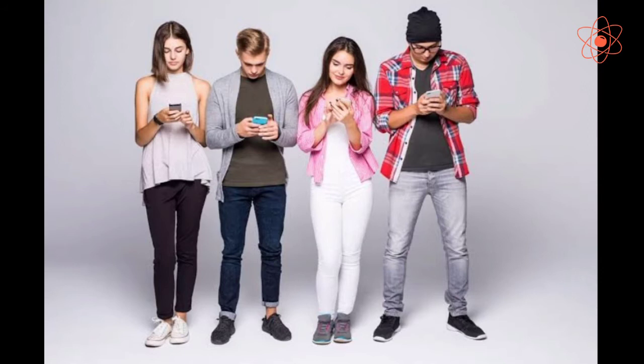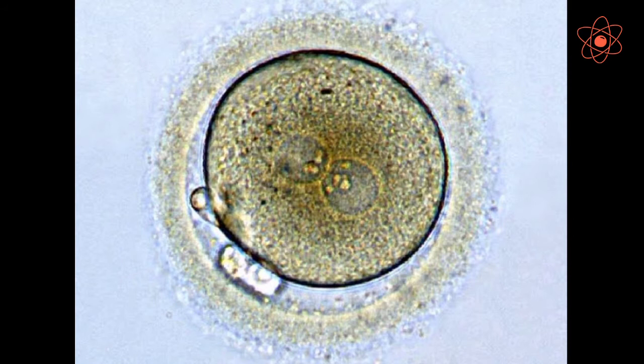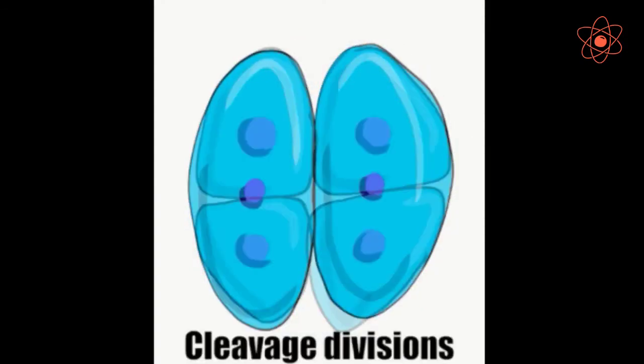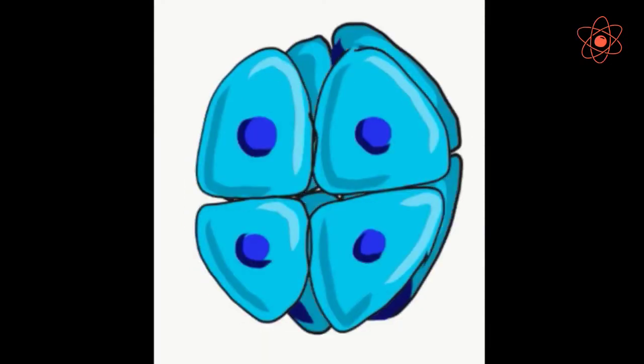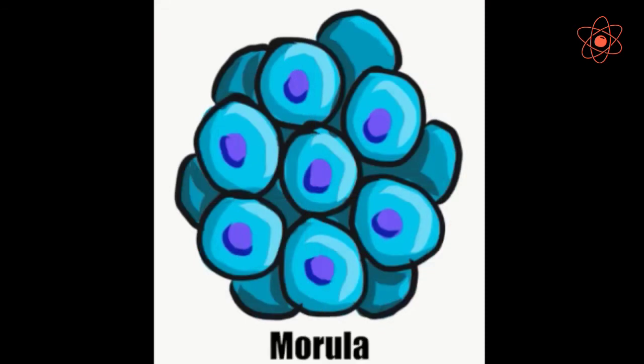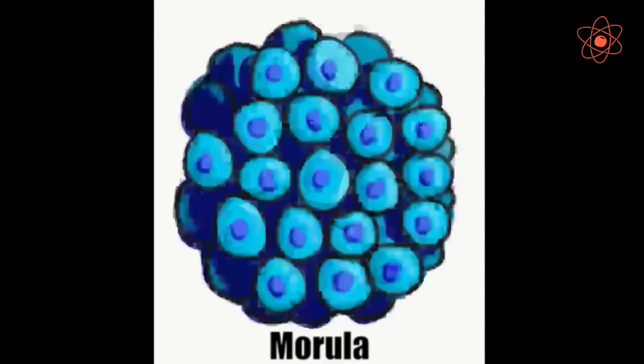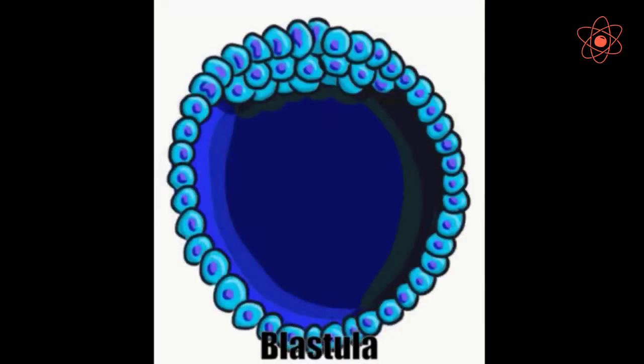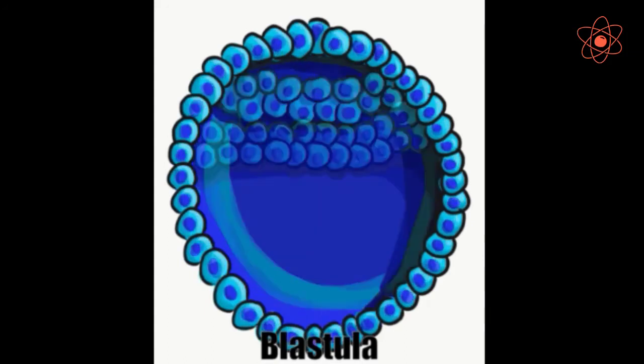All multicellular organisms begin their life as a single cell called the fertilized egg cell, also known as zygote. The fertilized egg multiplies and the number of cells increases as the development of the organism proceeds.